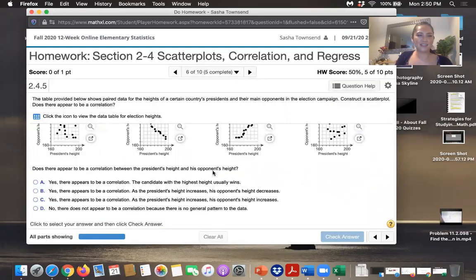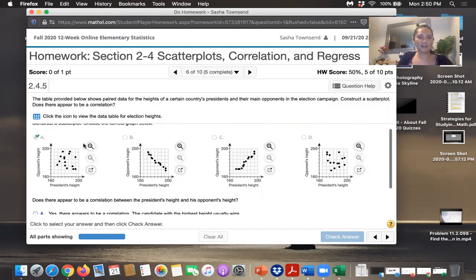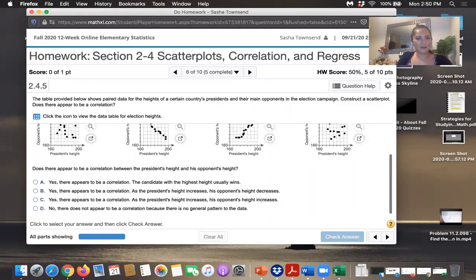Okay. And then the question says, does there appear to be a correlation between the president's height and the opponent's height? Well, just look at that scatter plot. Does it appear to be linear? Does it make sense to put a line through this data and use that line to approximate the relationship or to predict the relationship between an opponent's height and a president's height? I don't think so. I don't think that represents a line at all. The little points are all over everywhere. So I would say no, there does not appear to be a correlation because there's no general pattern to the data.